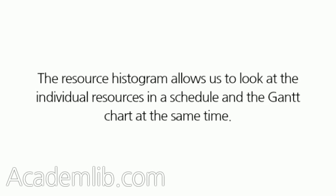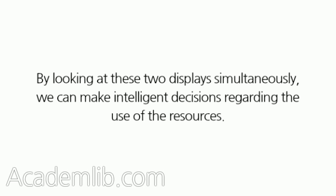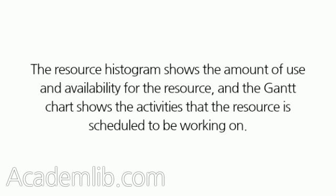The Resource Histogram allows us to look at the individual resources in a schedule and the Gantt chart at the same time. By looking at these two displays simultaneously, we can make intelligent decisions regarding the use of the resources. The Resource Histogram shows the amount of use and availability for the resource, and the Gantt chart shows the activities that the resource is scheduled to be working on.